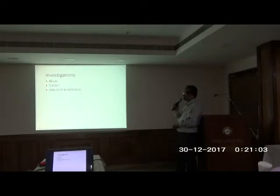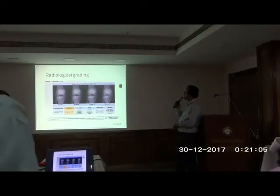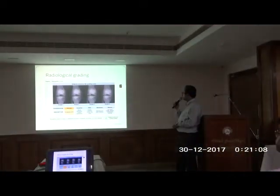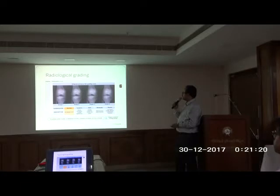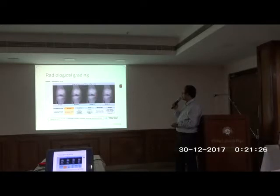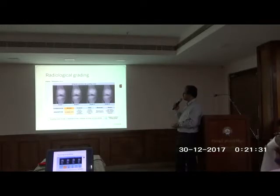MRI is not routinely required in osteoarthritis. We use the Kellgren-Lawrence classification for grading. Grade 1 is presence of a minor osteophyte, otherwise normal. Grade 2 is a definite osteophyte with normal joint space. Grade 3 is joint space narrowing. And grade 4 is joint space narrowing with subchondral sclerosis and osteophyte formation. The treatment is basically based on this classification.